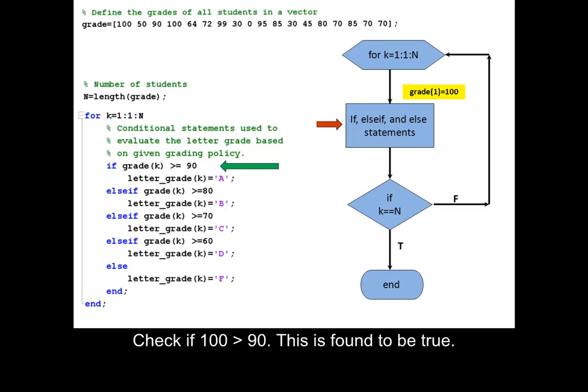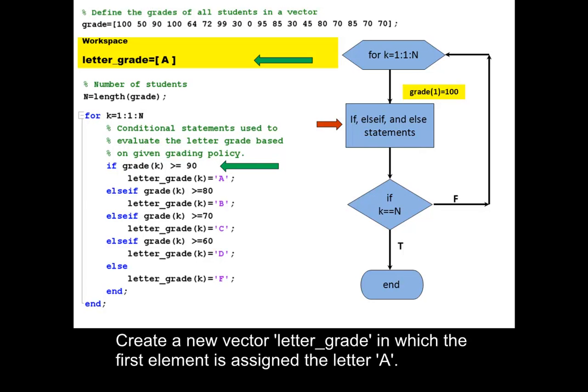Check if 100 is greater than 90. This is found to be true. Create a new vector letter_grade in which the first element is assigned the letter A.